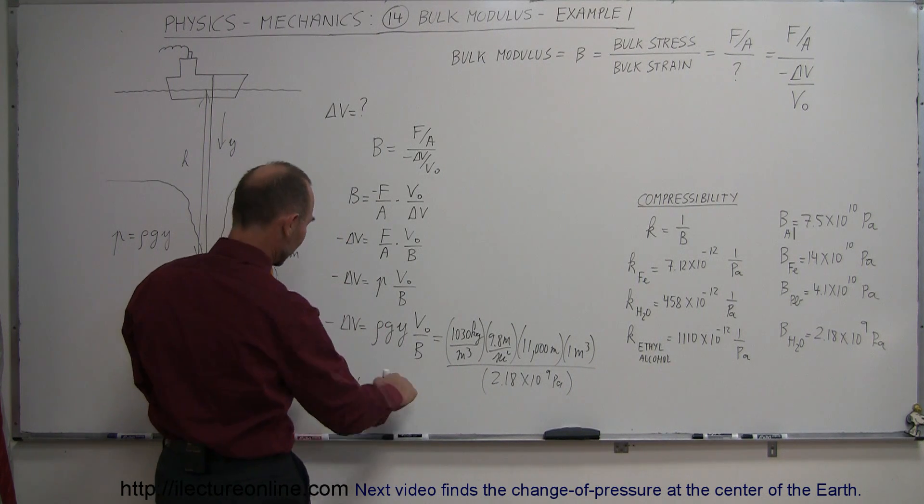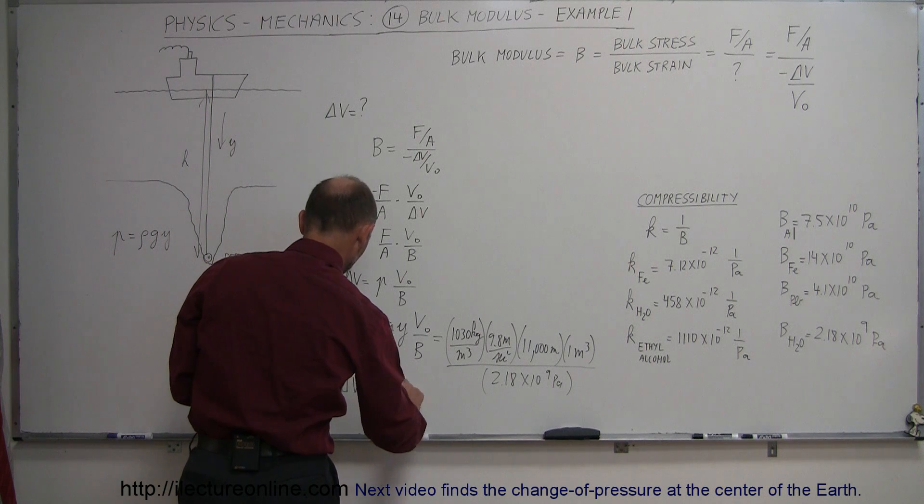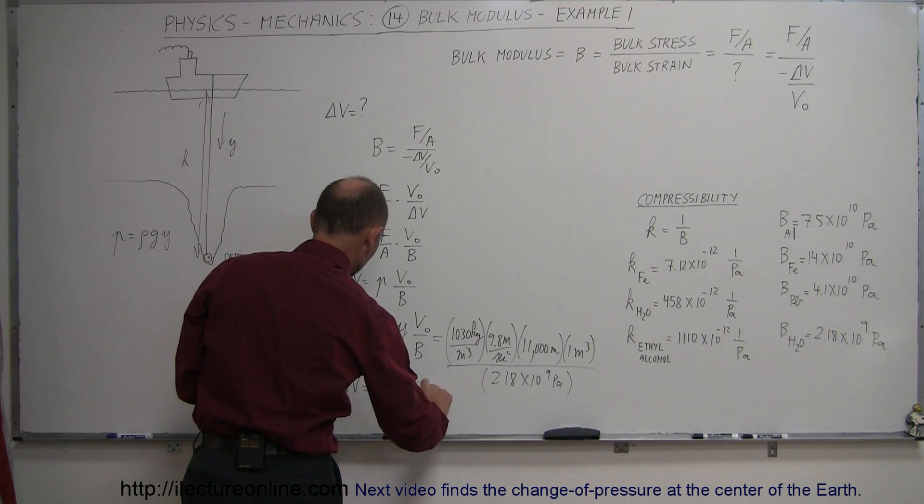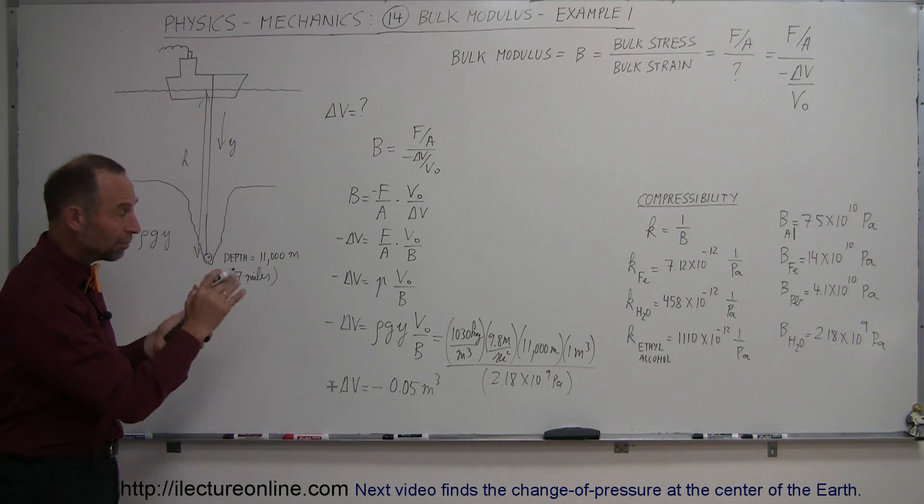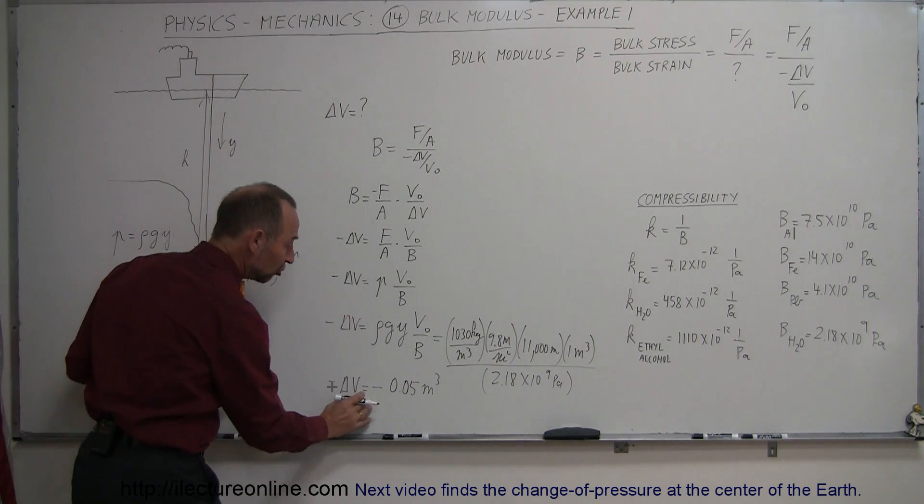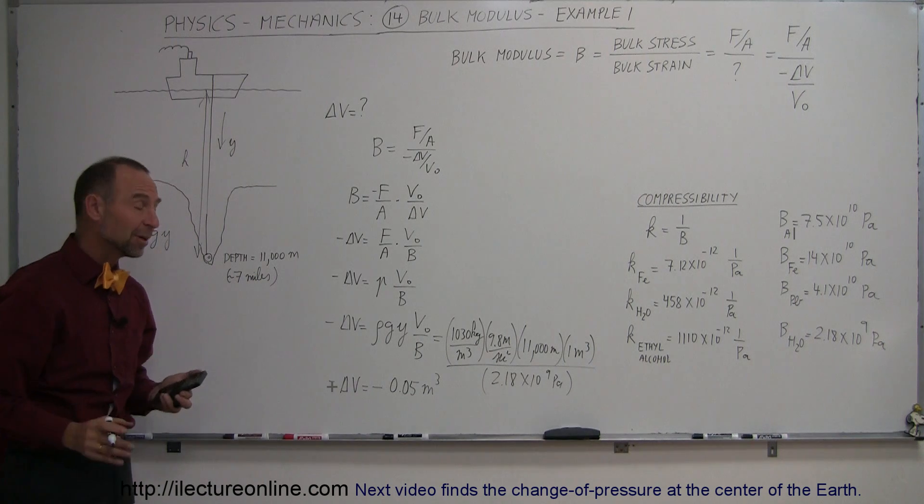Times 10,030 times 9.8 times 11,000 and times 1. So, that gives us minus delta V is equal to a minus, because I put the minus over here, we get a minus 0.05 meters cubed.